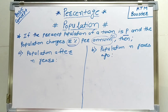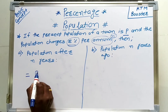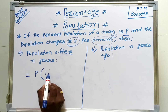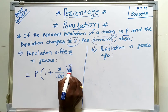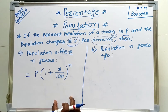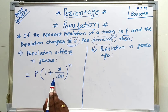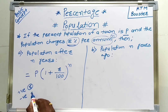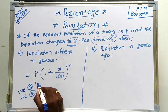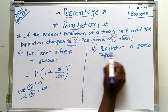So what will be the population after n years? We have the formula: P into 1 plus r upon 100, raised to n. Here P is the present population and r is the rate of change. If the population is increasing, take positive r, and if it is decreasing, take negative r. This is the basic concept used to calculate population after n years.